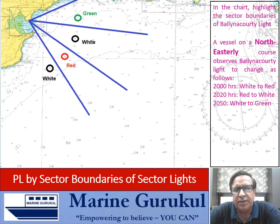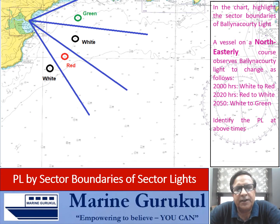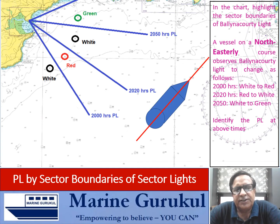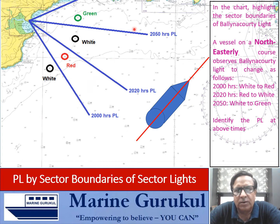Please remember these changes in colors have to be seen together with the course that the vessel is steering. In this case the vessel is steering a northeasterly course. We need to identify which of these are the PLs at 2000 hours, 2020, and 2050. When on a northeasterly course, as the vessel crosses each sector boundary, the color changes accordingly — from white to red at 2000, red to white at 2020, and white to green at 2050.